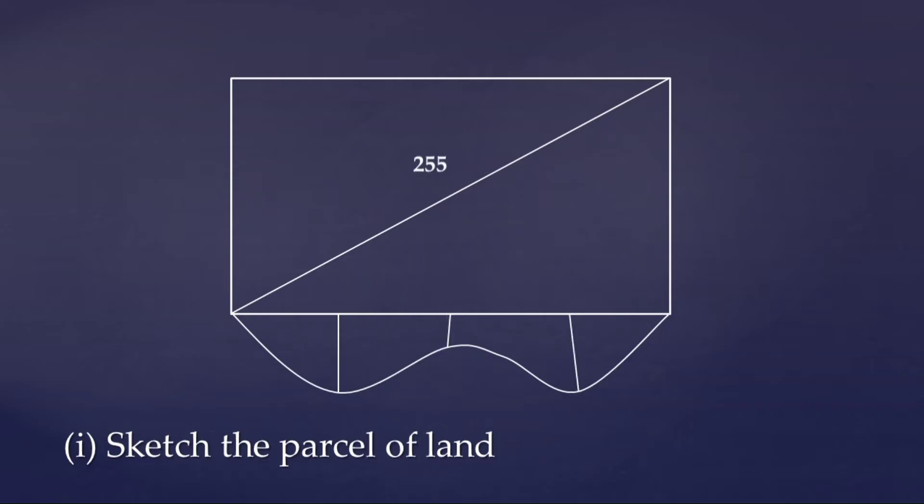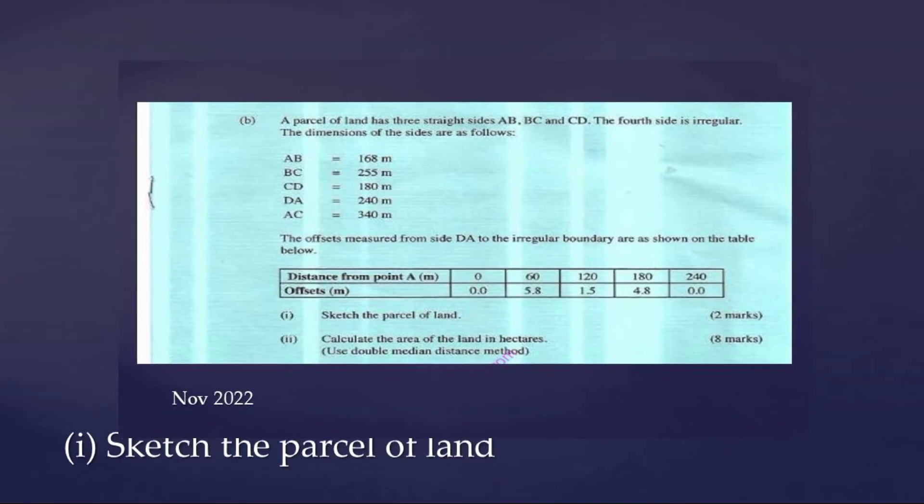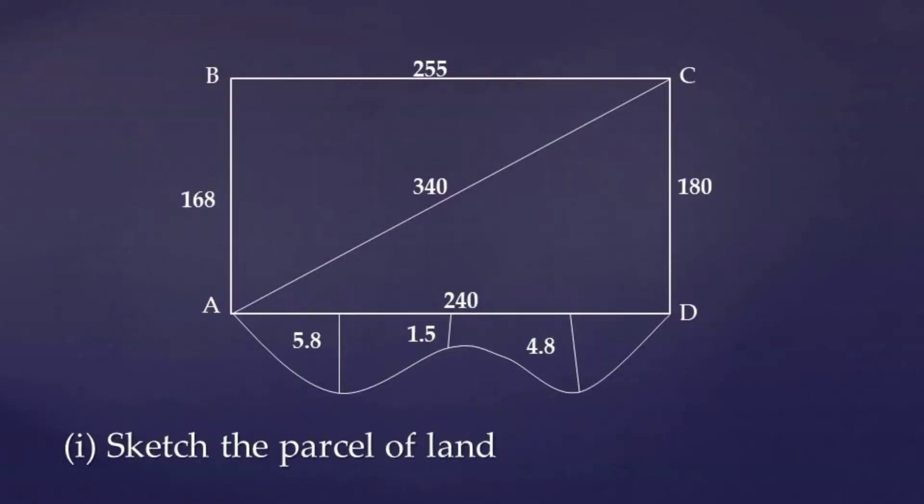So the shapes, the distances where our irregular, the offsets are shown in the table, we will obtain them in the table with that interval of 60 meters.